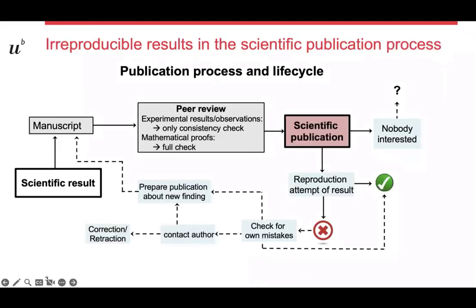If we have a scientific result which is published in literature and which is not reproducible, what happens with it? For this we take a look at the publication life cycle. We start with the scientific result, then we write a manuscript. The manuscript goes into peer review, and in peer review, usually there is no full check for reproducibility.